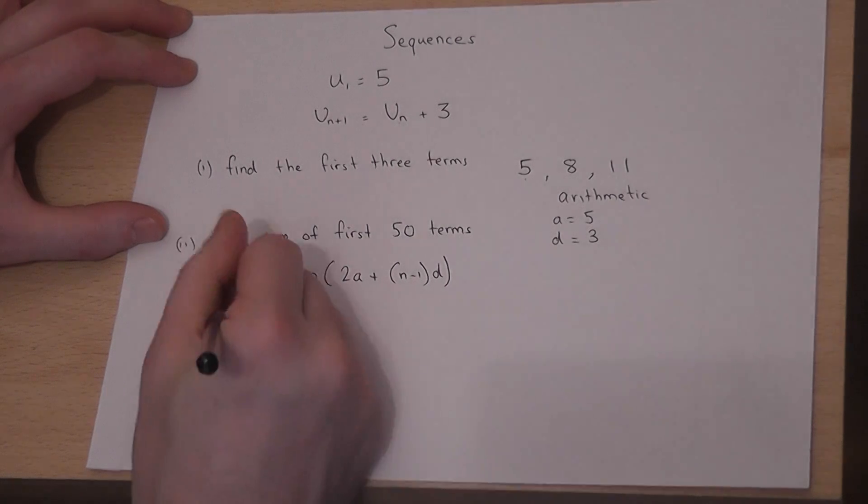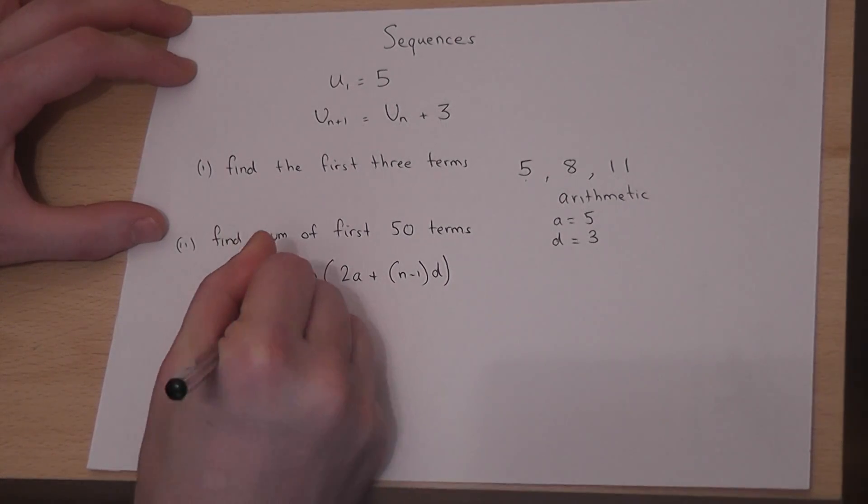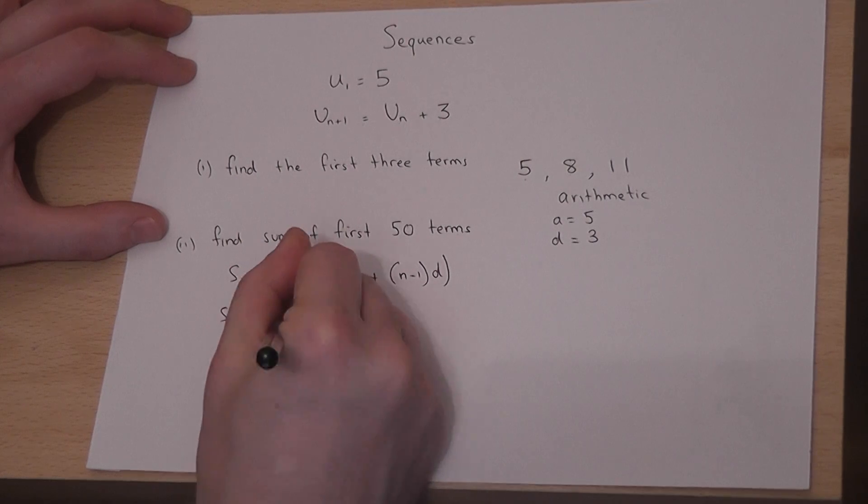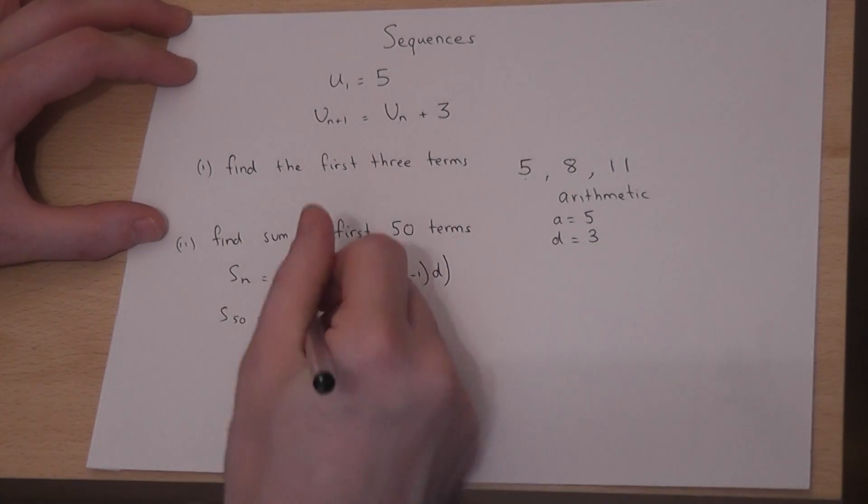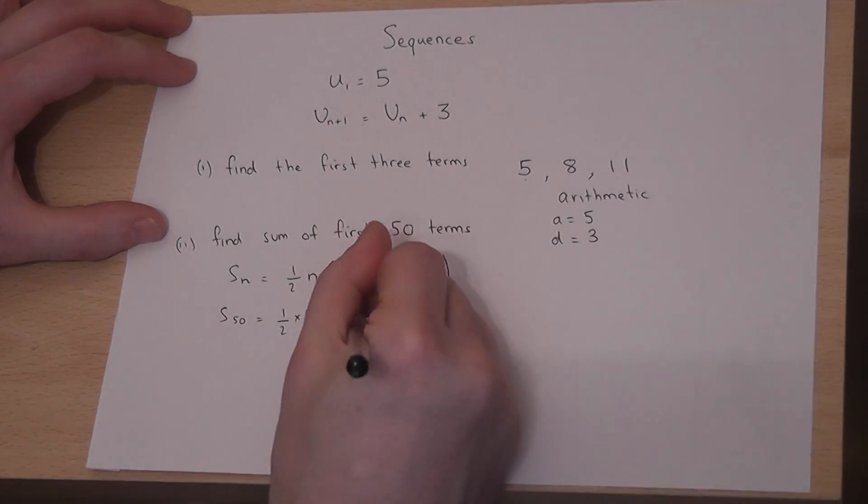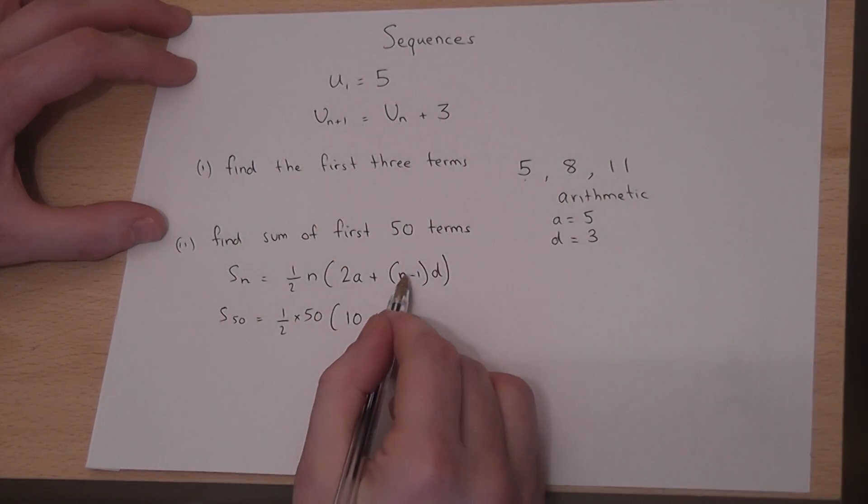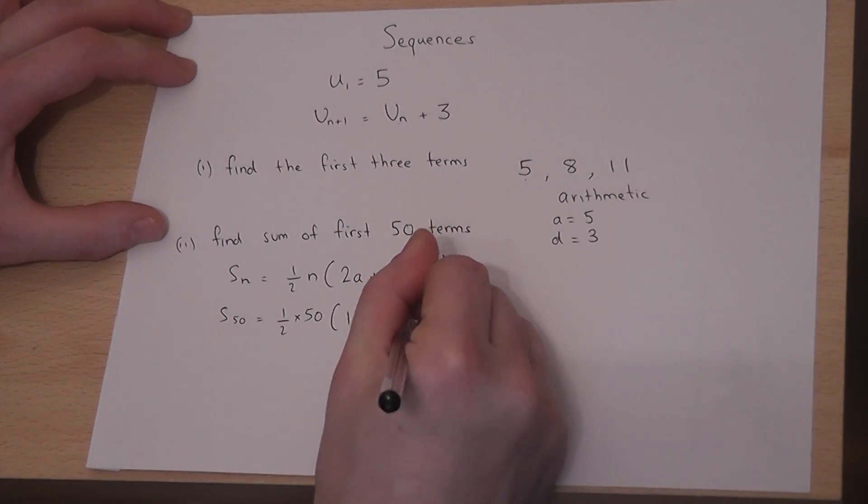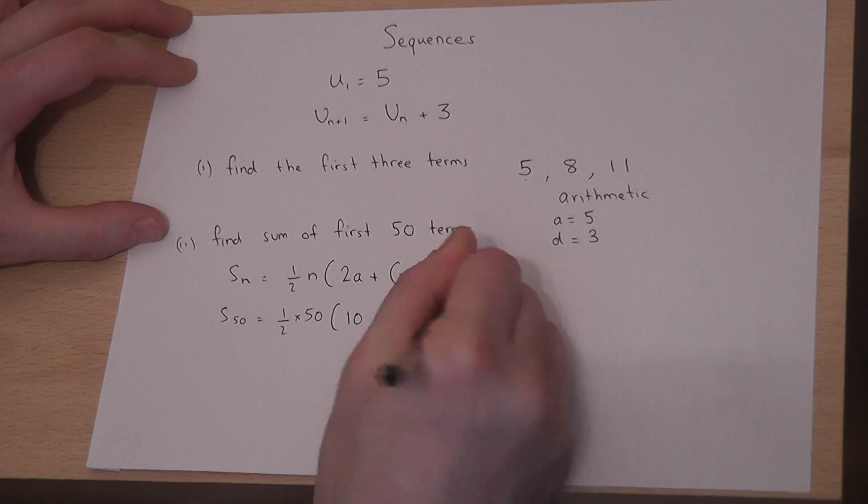So the sum of the first 50 terms is a half of n, which is 50. 2 times a is 10. n minus 1, well n was 50, so n minus 1 is 49. So it's 49 times by 3.